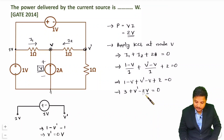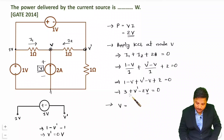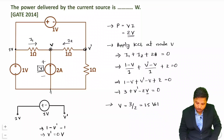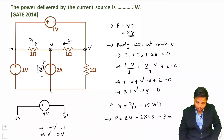Now that V dash equals 0, we can substitute back to find V. From 3 plus 0 minus 2V equals 0, we get V equals 3 divided by 2, which is 1.5 volts. So power P equals 2V equals 2 into 1.5, giving 3 watts.